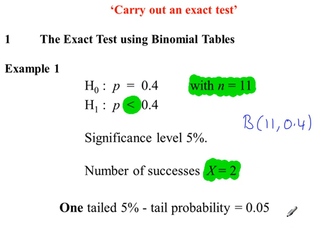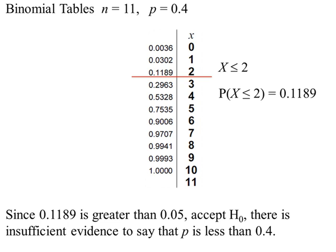Then we compare that probability to the significance level 0.05. From the tables, P(x ≤ 2) has a probability of 0.1189.